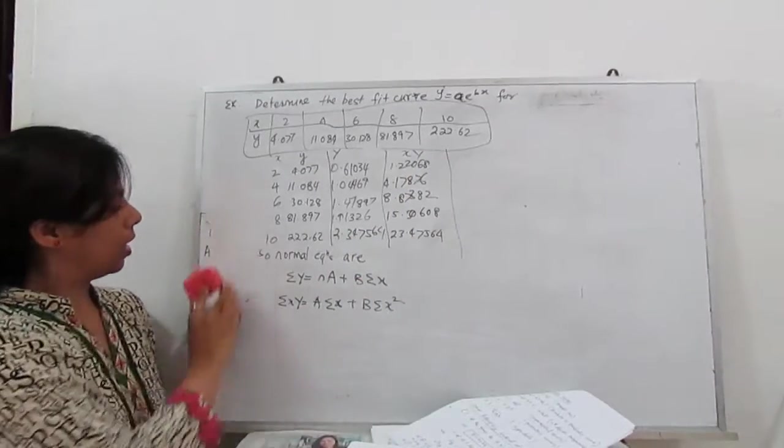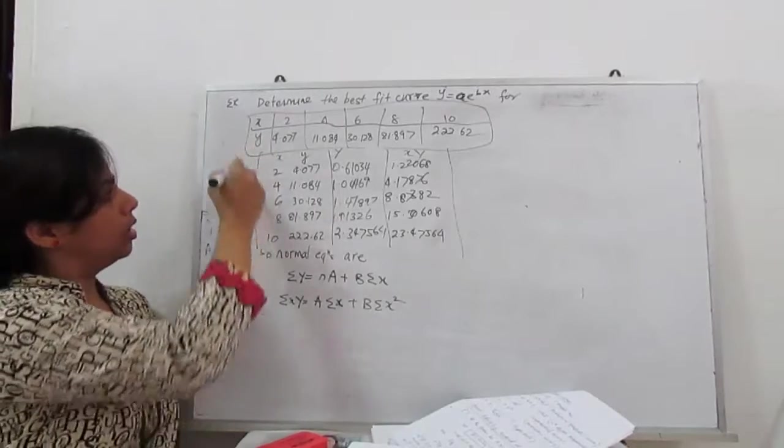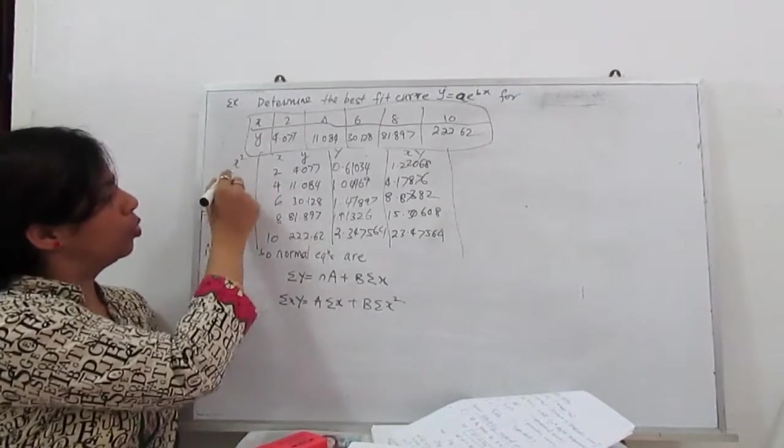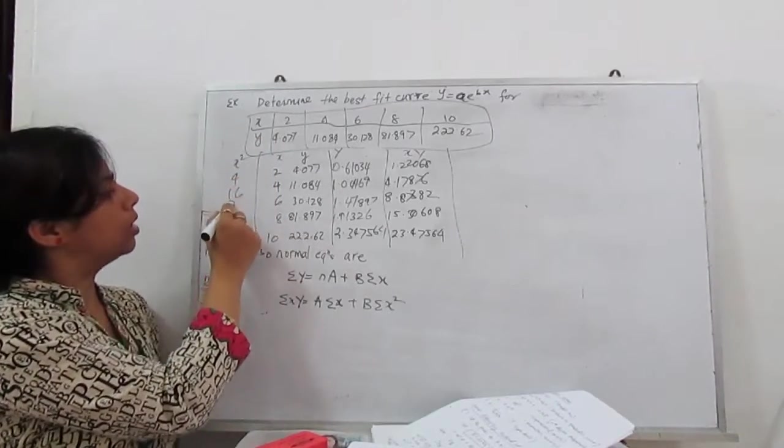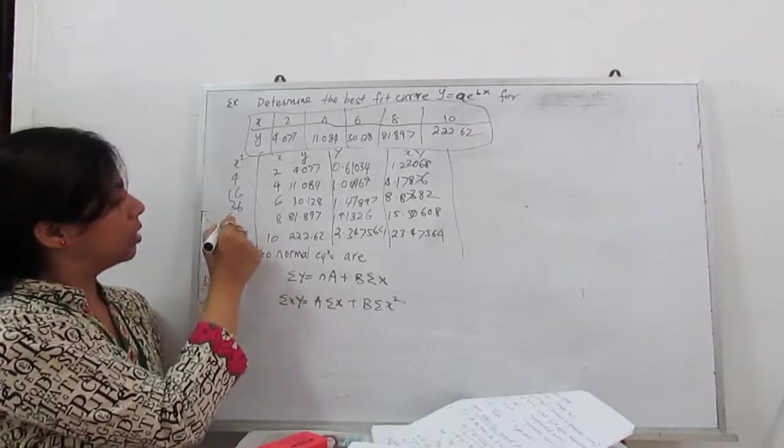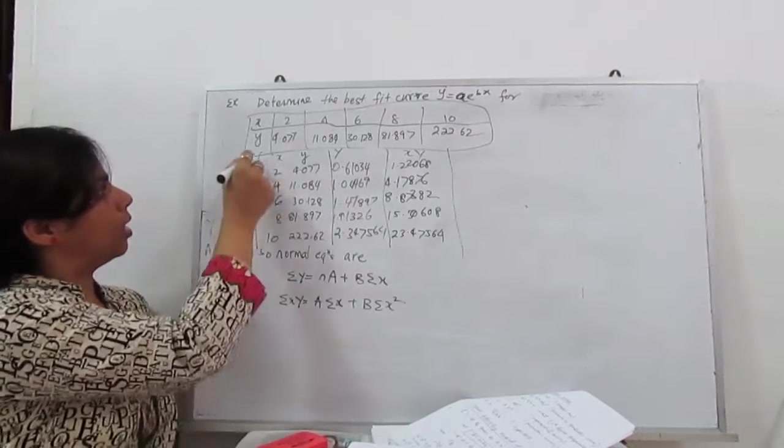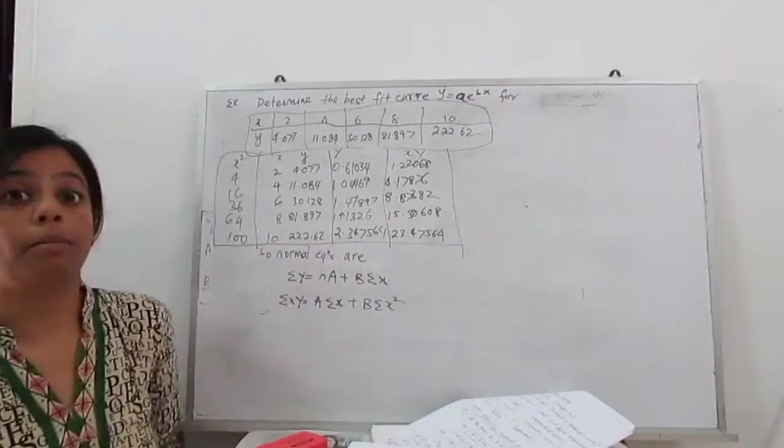Next is x square. So 2 square is 4, 16, 36, 64 and 100. This is our table. Now we need the summation, means sum of these columns.